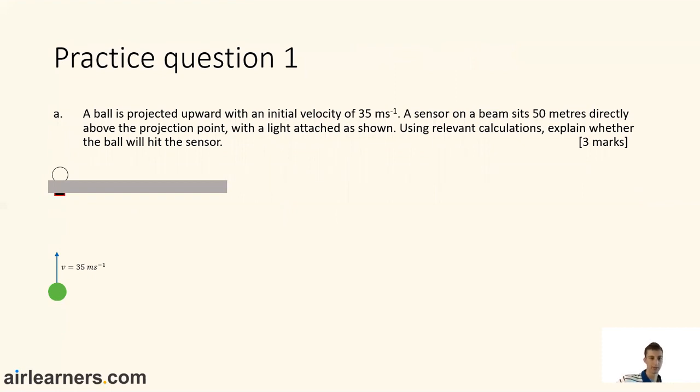Okay, practice question one. A ball is projected upward with an initial velocity of 35 metres per second. A sensor on a beam sits 50 metres directly above the projection point with a light attached as shown. Using relevant calculations, explain whether the ball will hit the sensor. Three marks, you've got three minutes. Pause the video and get back to it once you're done.